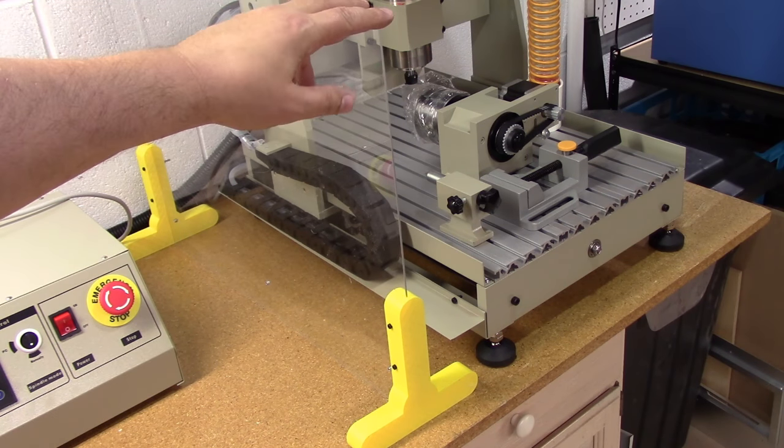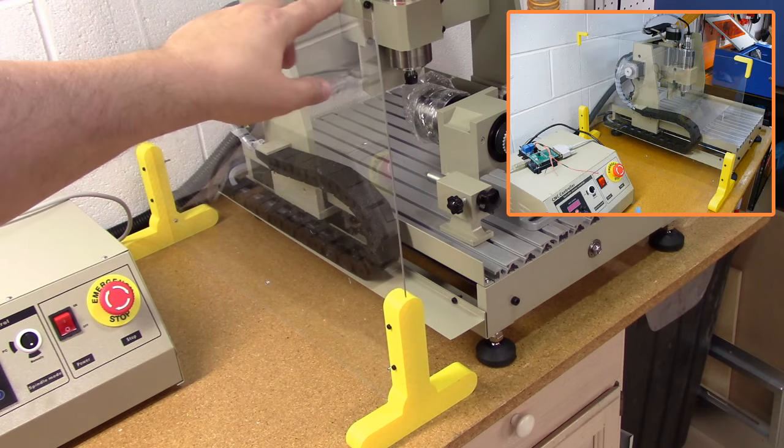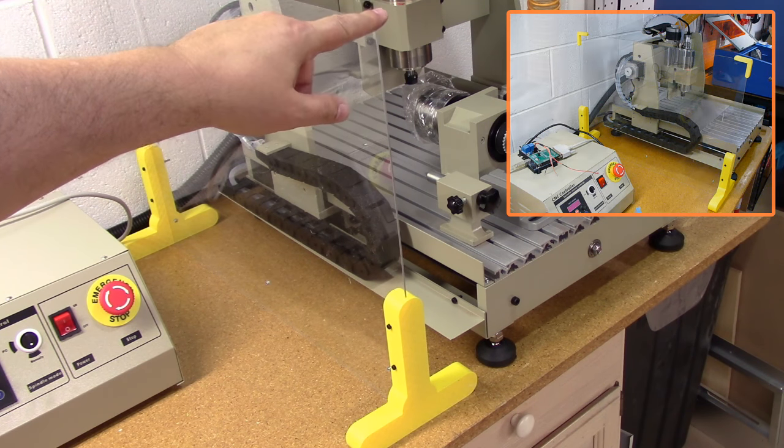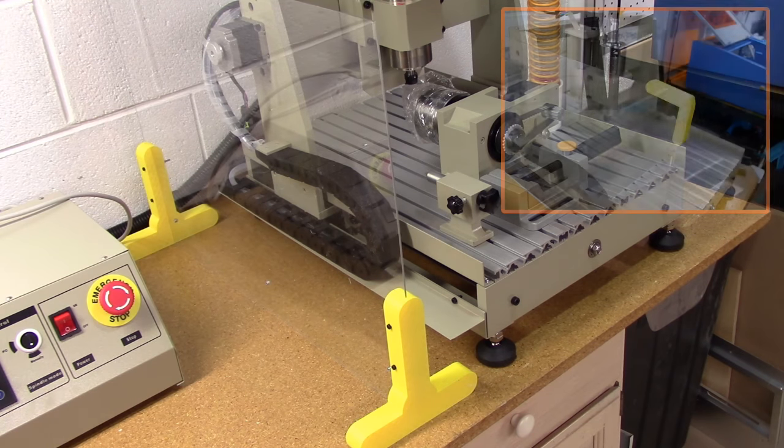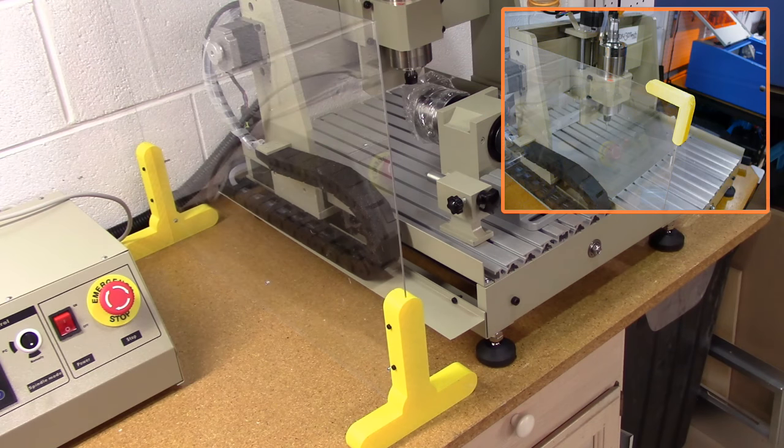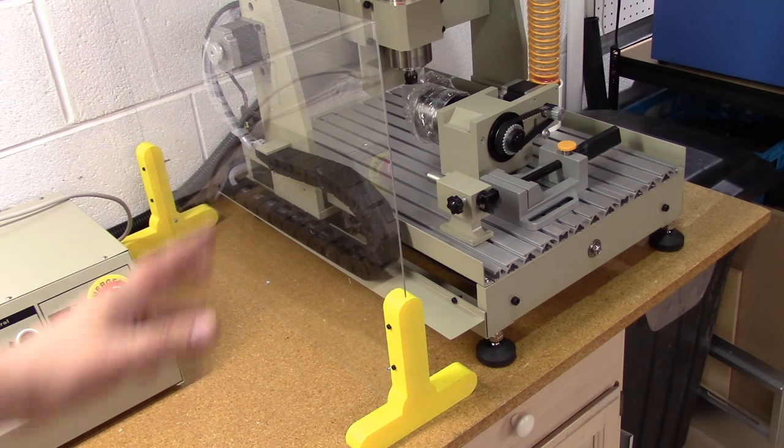So one of the things I am going to make is some corners for this because this sharp corner here—I've almost poked myself on this a couple times because you really don't see it when you lean down. So I am going to print some to go on that corner, but that'll be another project.